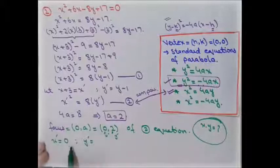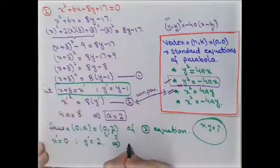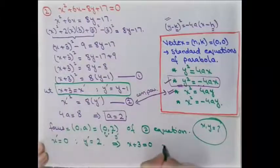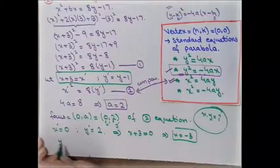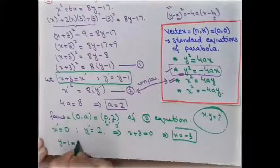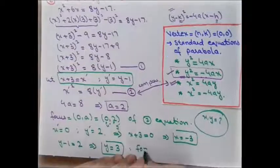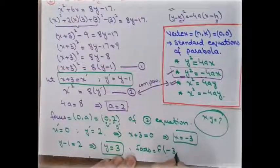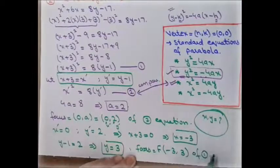In the focus of the second equation, x′ = 0 and y′ = 2. Substituting back: x + 3 = 0 gives x = −3, and y − 1 = 2 gives y = 3. Therefore the focus of the first equation is F(−3, 3).